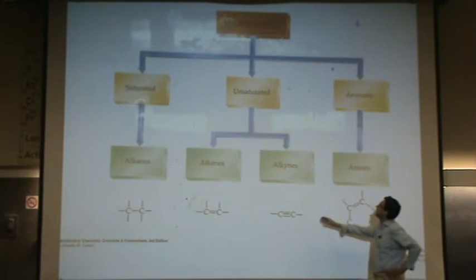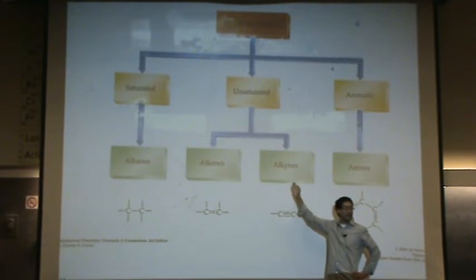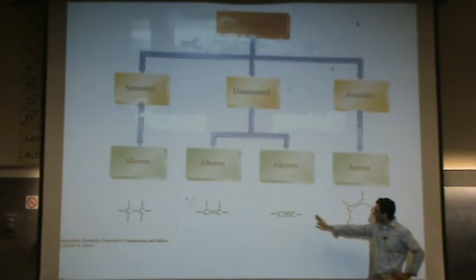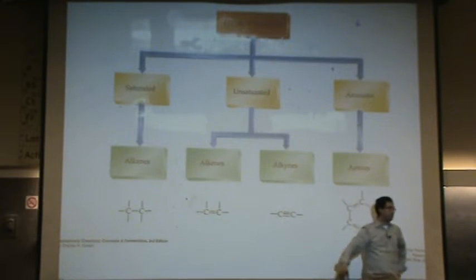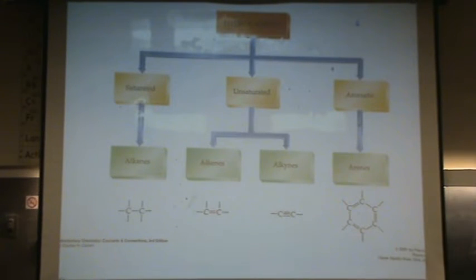The next one, unsaturated as well, is called an alkyne, Y-N-E suffix. And that has triple bonds, or at least one. So if there is at least one triple bond, then it is called an alkyne. So there is alkane, alkene, and alkyne.